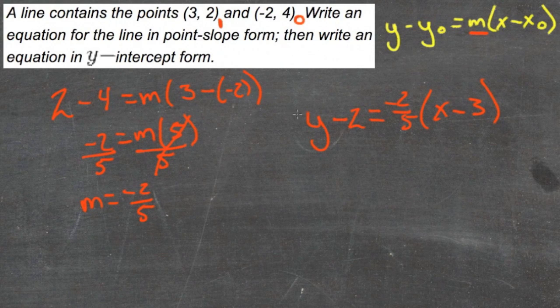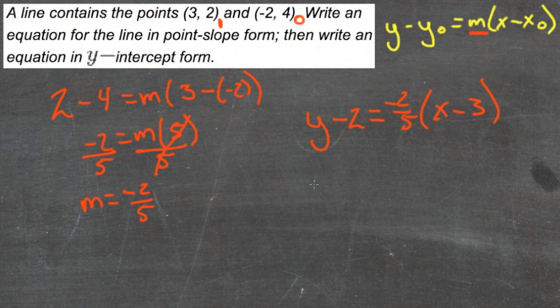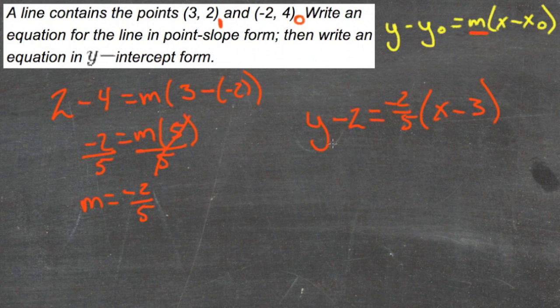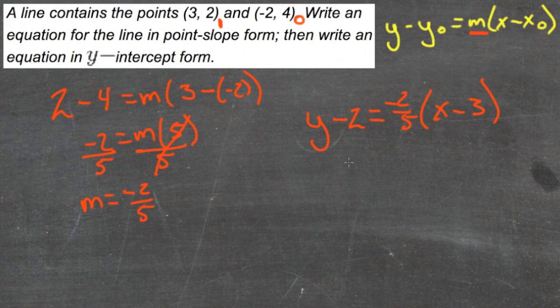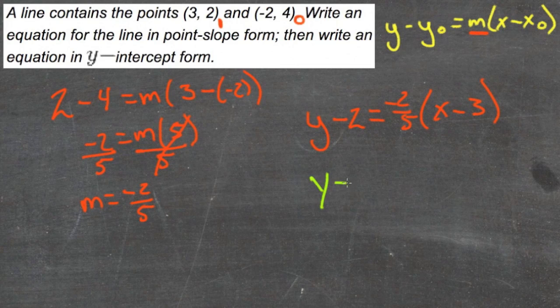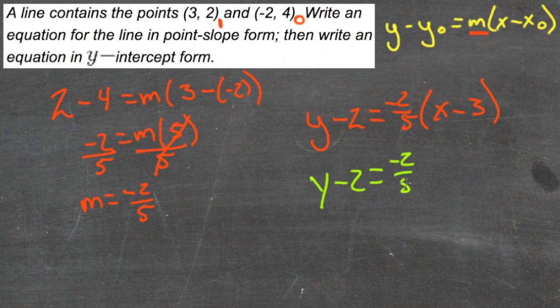Now to write it in y-intercept form, we need to solve for y. Let's do that in a different color here. So we'll take this information. The first thing we'll do is add 2 to both sides. Actually, you know what? The first thing I'll do is distribute. So let's do y minus 2 equals -2/5 x.